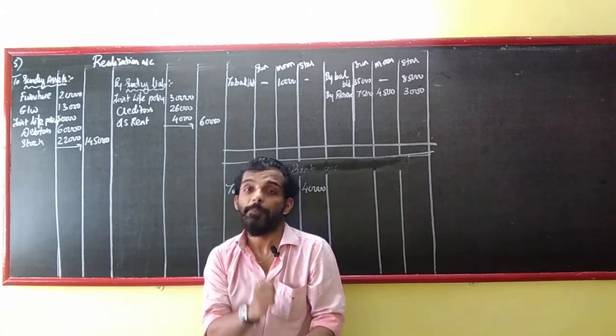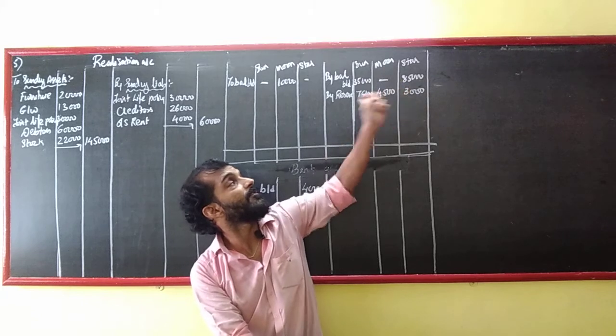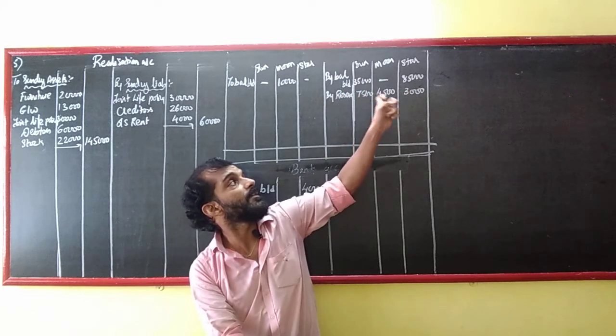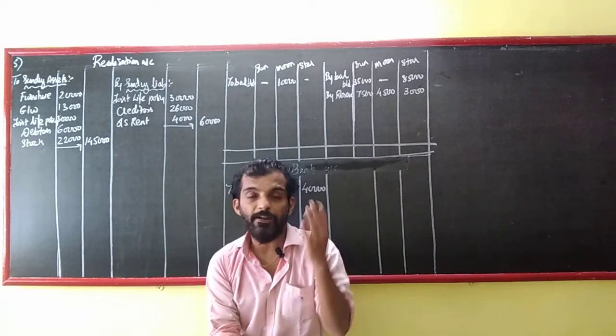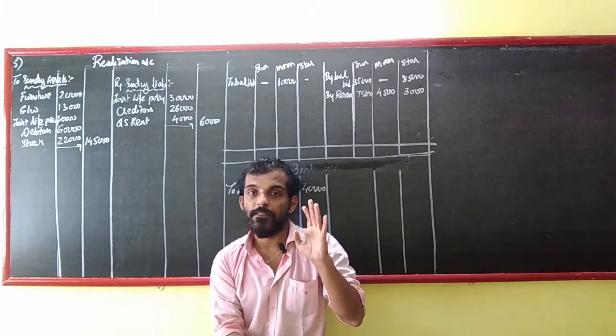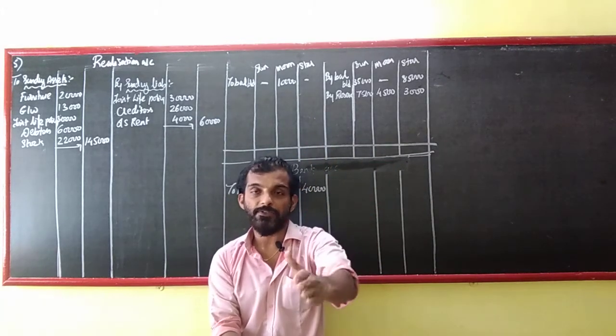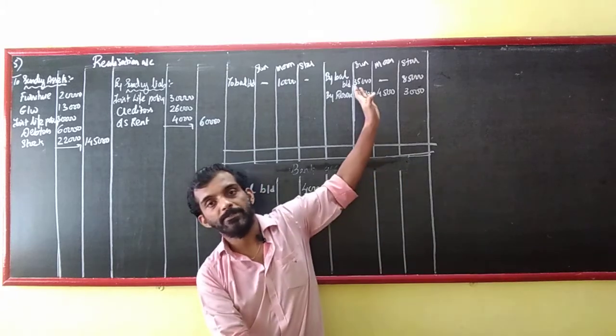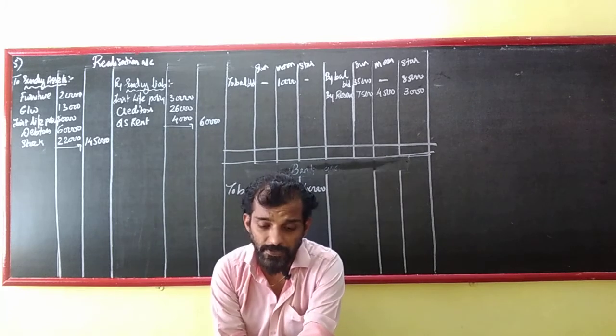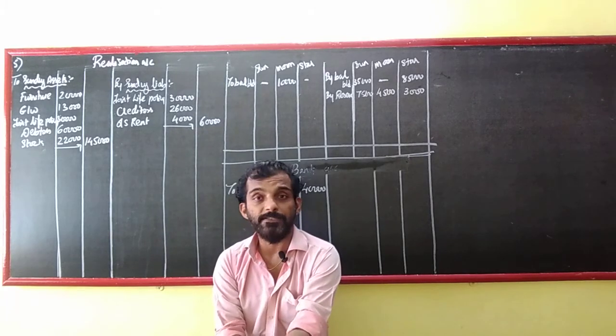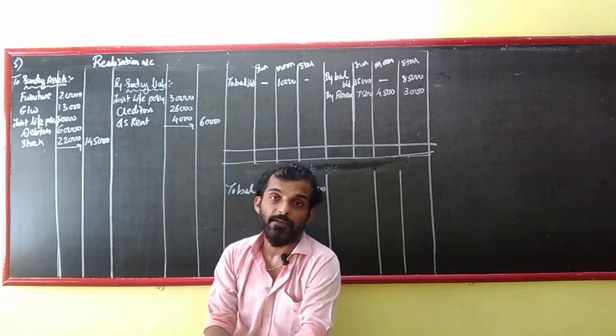Transfer of liabilities except capital and reserve. To balance, capitals are 35 and 85. Reserves: 15,000 reserve fund divided by 5:3:2 ratio, that means 10. So 1,000 into 5, 1,000 into 3, 1,000 into 2 gives us 7,000, 4,500 and 3,000. Transfer of liabilities: Joint life policy fund 30, creditors 26, and outstanding rent 4. So 30 plus 26 plus 4 equals 60.